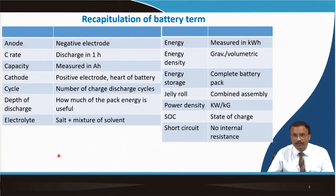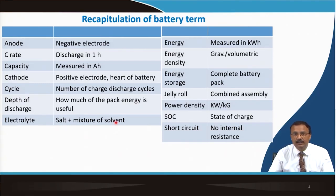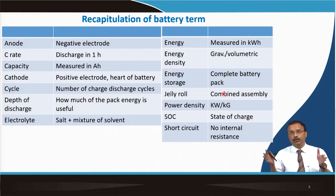Starting with 100 ampere-hours, it should be at 85 ampere-hours by the time you have cycled it 500 times. Depth of discharge is how much of the pack energy is useful. The electrolyte in commercial cells still uses a salt dissolved in a mixture of solvents. Energy is usually measured in kilowatt-hours, and energy density can be either gravimetric or volumetric. Energy storage refers to the complete battery pack.